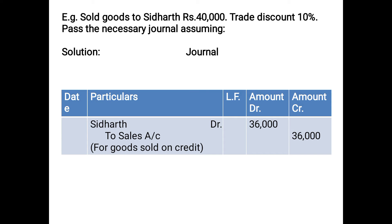Next: sold goods to Siddharth for Rs. 40,000, trade discount 10%, on credit. Since the word 'cash' is not given, it is a credit sale. Calculation: 10% of Rs. 40,000 = Rs. 4,000 trade discount; net sale value = Rs. 36,000. Entry: Siddharth debited Rs. 36,000 to Sales Account Rs. 36,000. Since Siddharth is a human being, the word 'account' is not suffixed. Narration: for goods sold on credit.